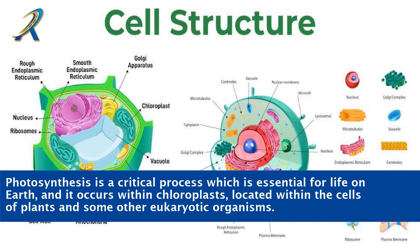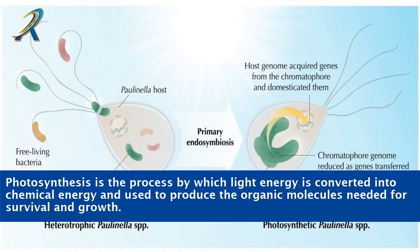Photosynthesis is a critical process which is essential for life on earth, and it occurs within chloroplasts, located within the cells of plants and some other eukaryotic organisms. Photosynthesis is the process by which light energy is converted into chemical energy and used to produce the organic molecules needed for survival and growth.